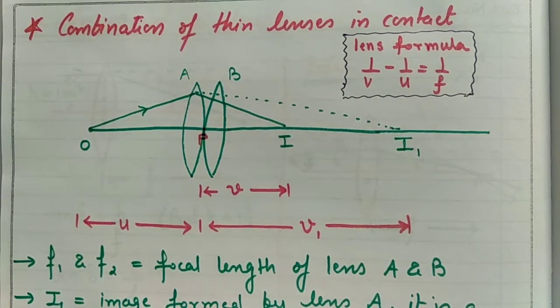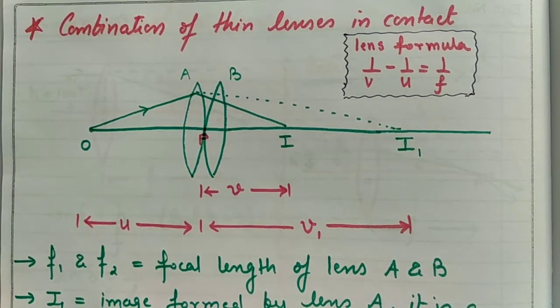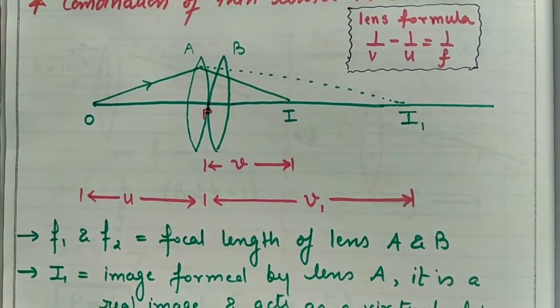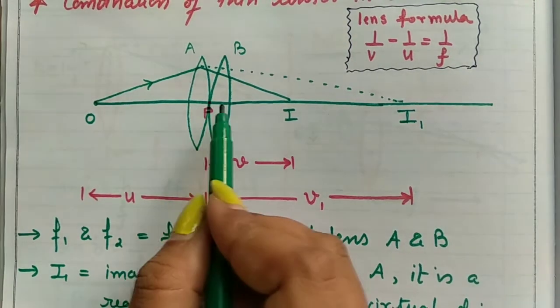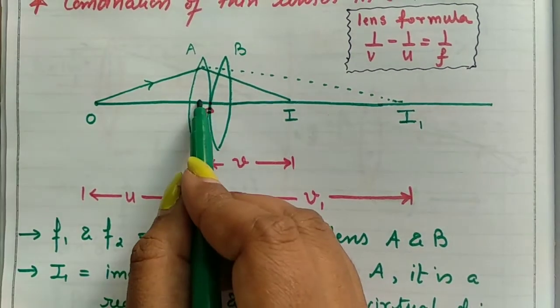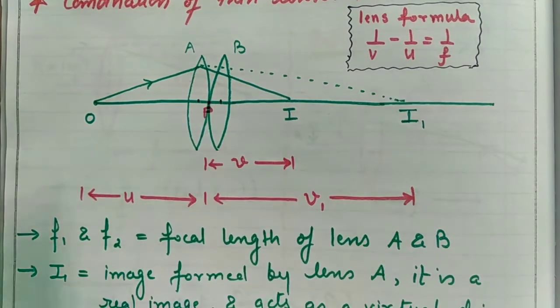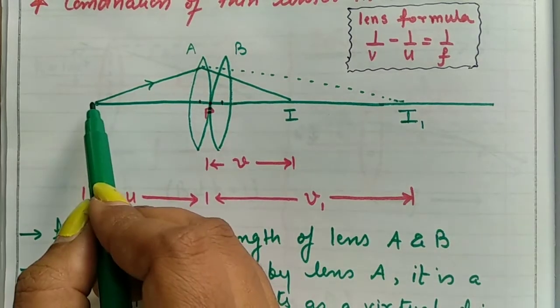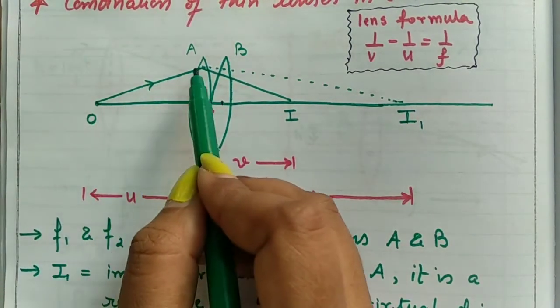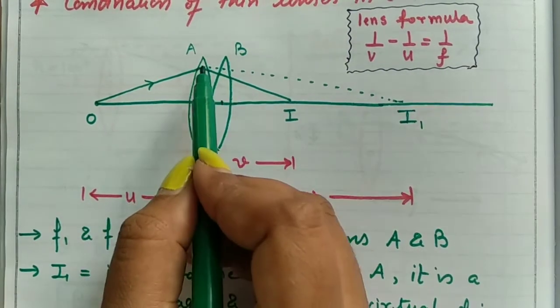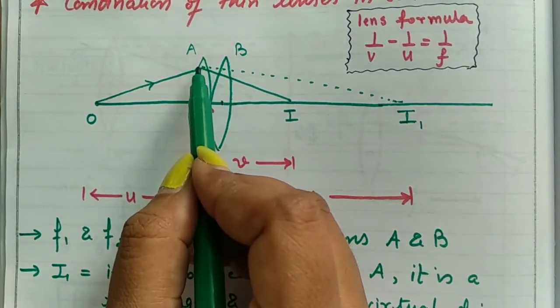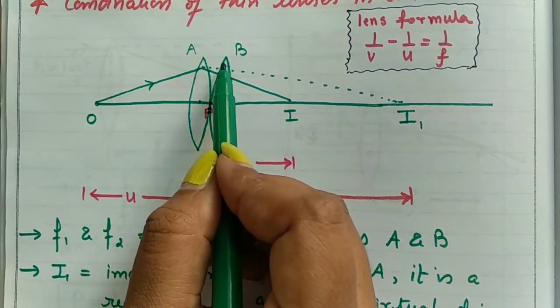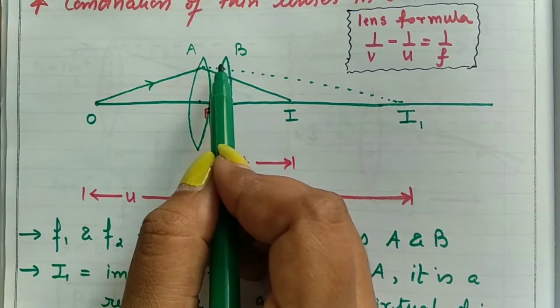Students, now we will see combination of thin lenses. Suppose I have two lenses A and B having focal length f1 and f2, and they are in contact with each other. I'll assume that both the lenses are very thin so that their optical centers may coincide at one point P. Suppose O is the object. From this object, one ray is being incident on lens A and this lens will refract that ray.